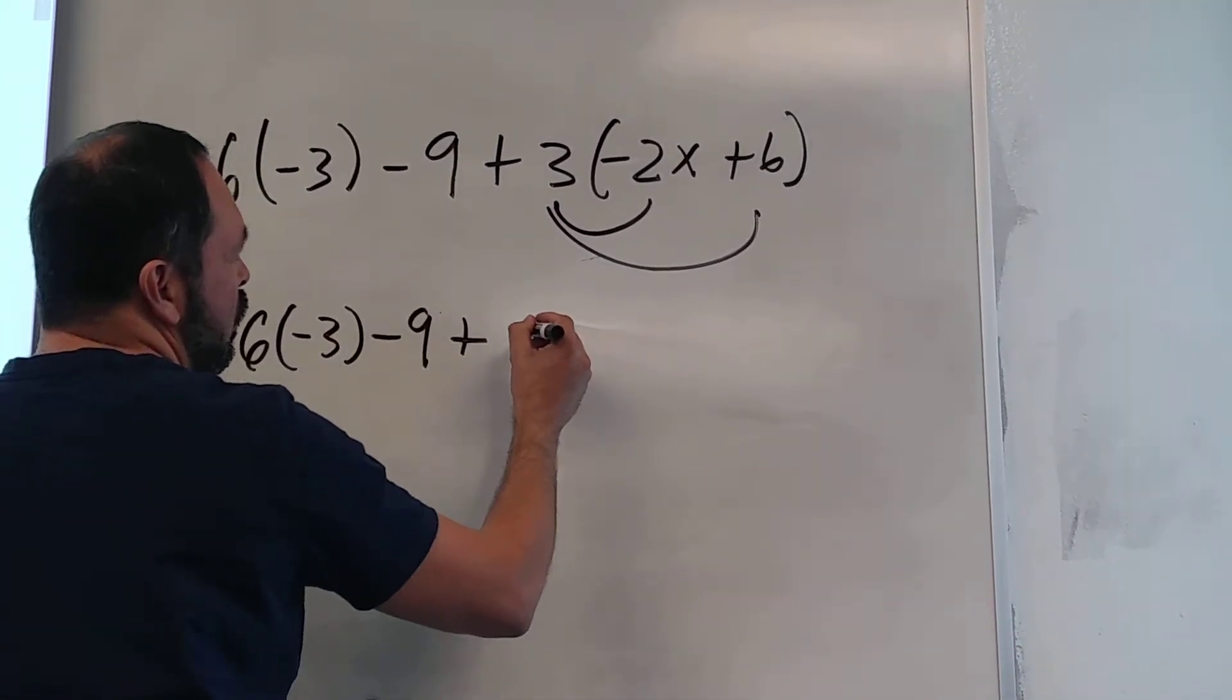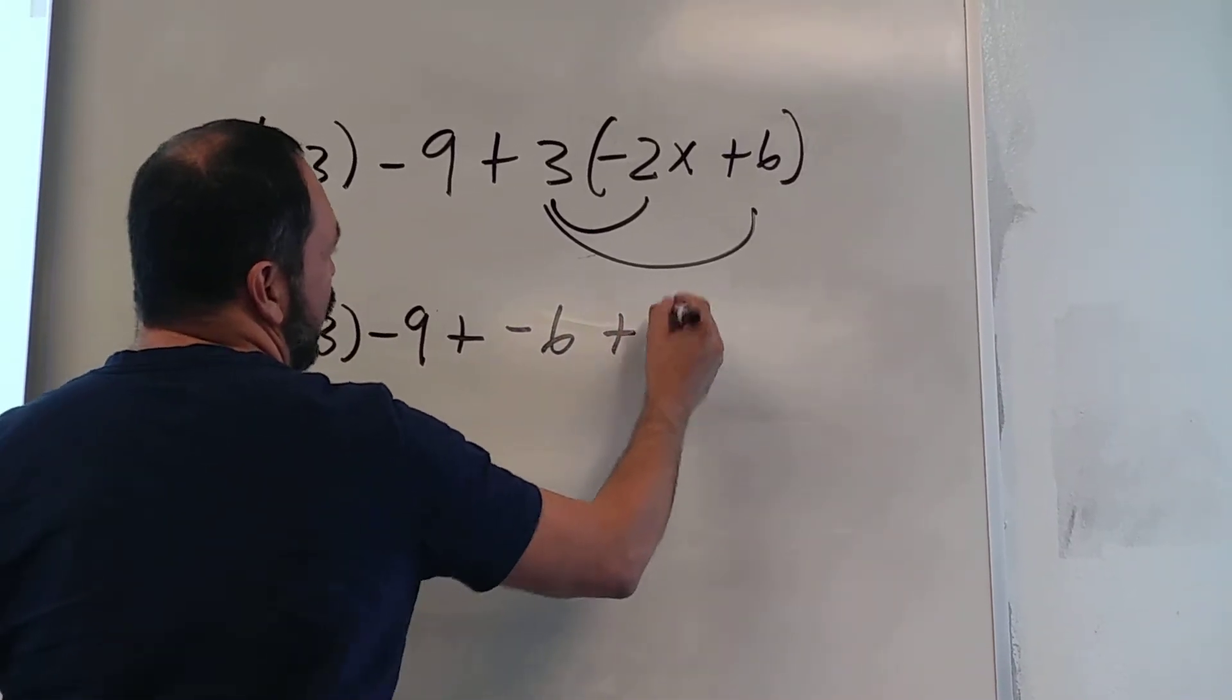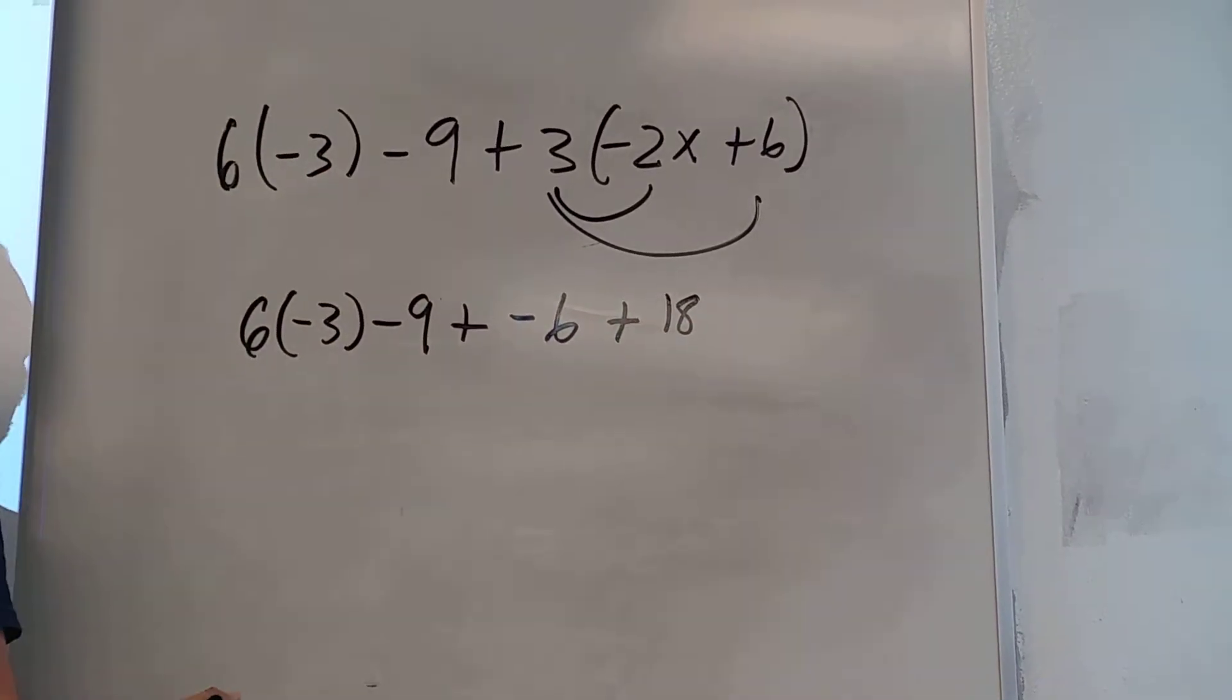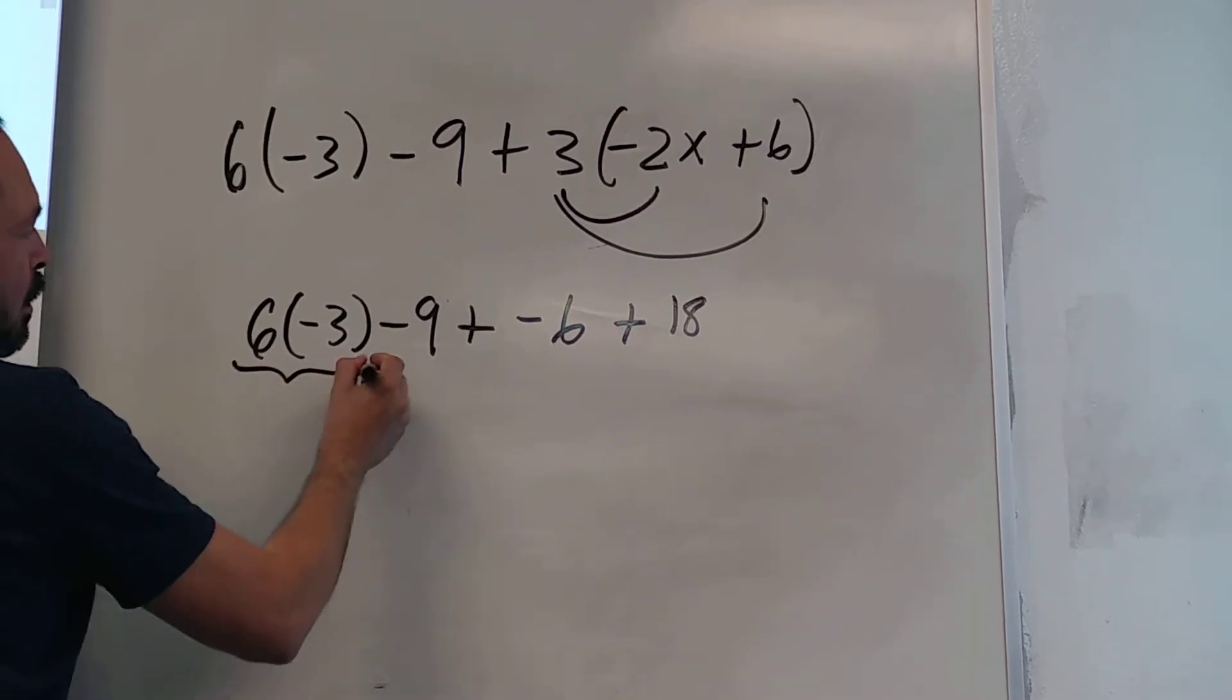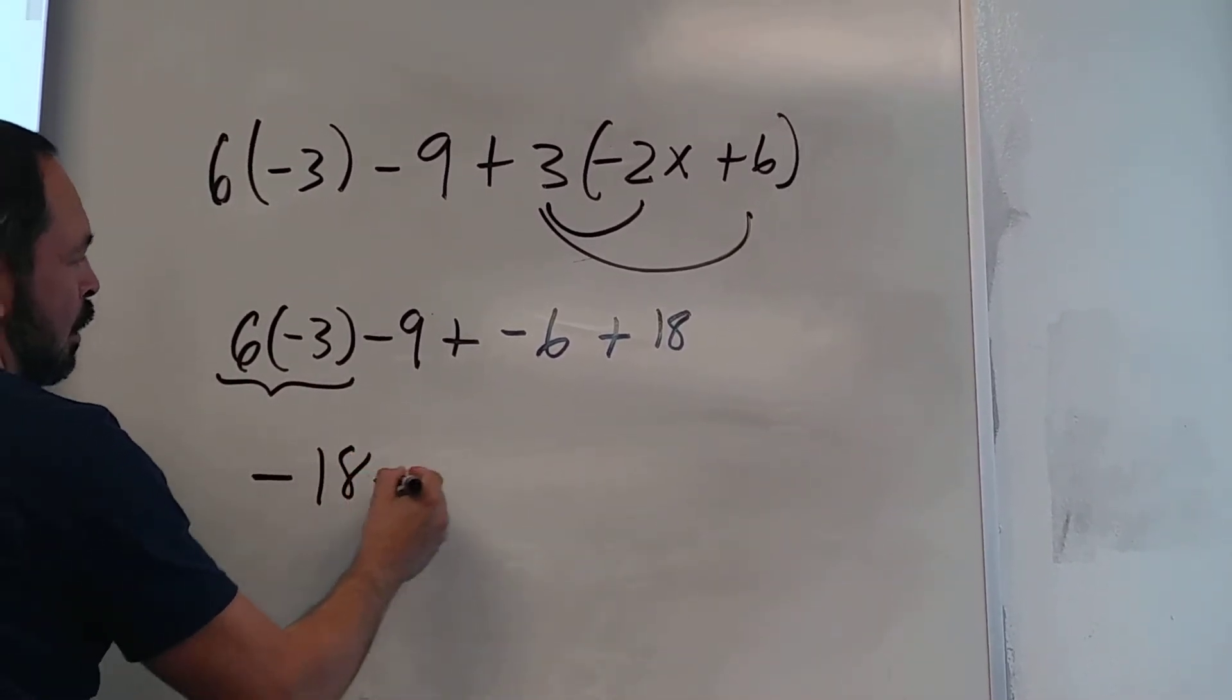That leaves me with negative 6 plus 18. Then let me multiply these. That's negative 18 minus 9.